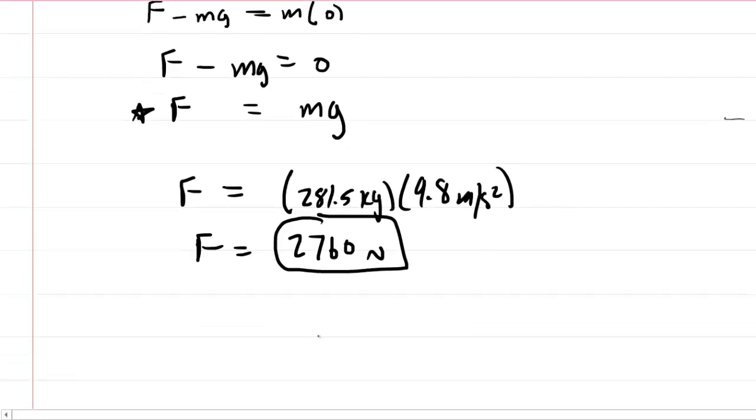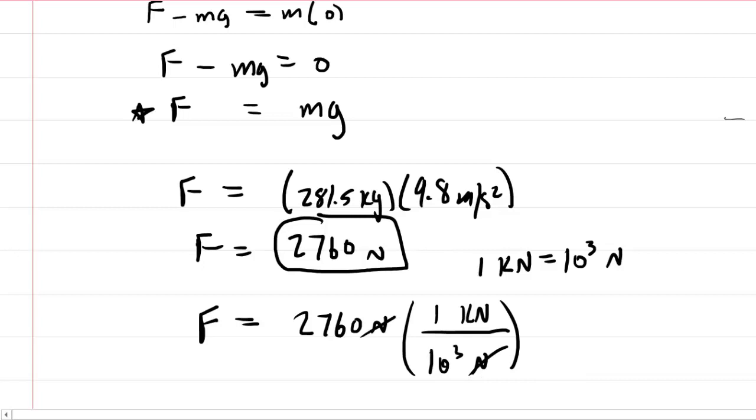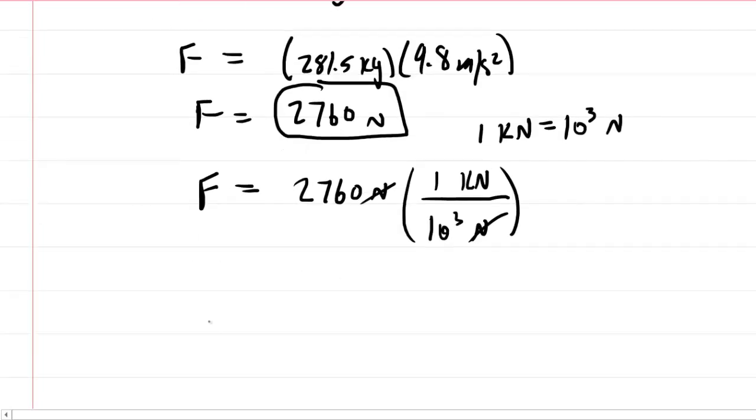And if your homework system requests kilonewtons, we recall that 1 kilonewton is 10 to the power of 3 newtons. So you'd have to do a little conversion at the end here. Take your newtons and then multiply by that conversion factor. Put the kilonewtons in the numerator and the newtons in the denominator. That way, the newtons would cancel. So you're basically dividing your 2760 by 10 to the 3. And when you do that, you end up with 2.76, that would now be in kilonewtons. So that's an equivalently correct answer to part B.